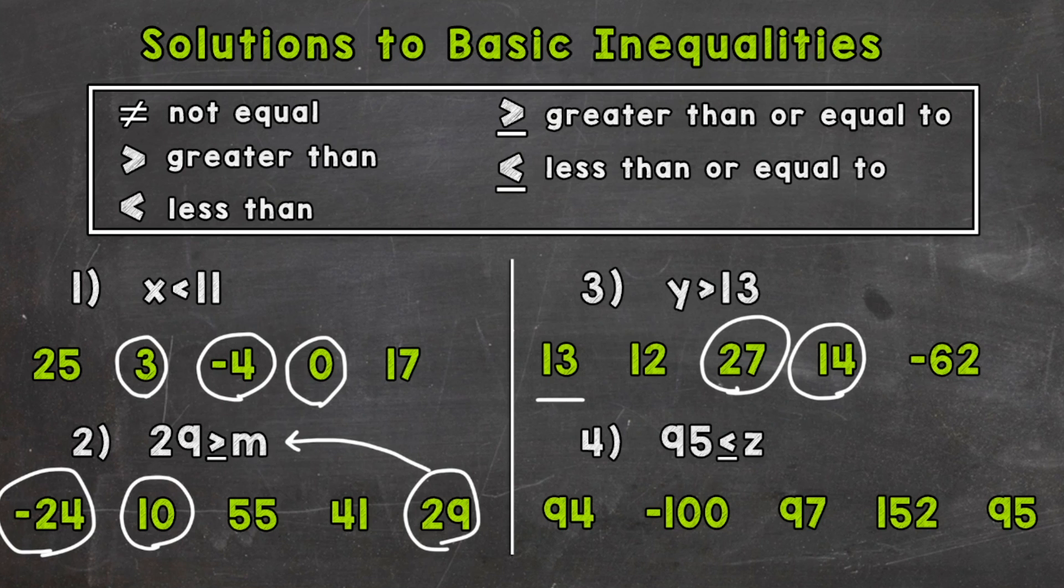So lastly, let's move on to number 4, where we have 95 is less than or equal to z. So 95 needs to be less than or equal to any of our correct solutions. So we're looking for numbers greater or equal to 95. So 94 would not work. 95 is less than or equal to 94 is not true. Same thing for negative 100.